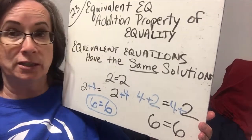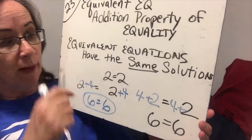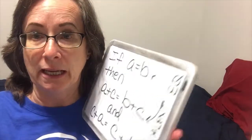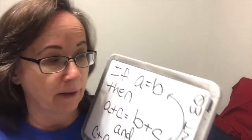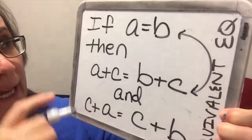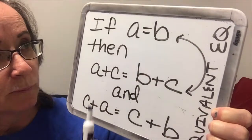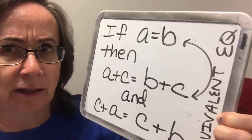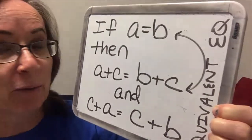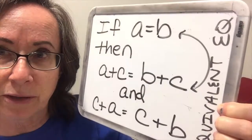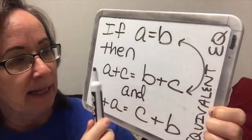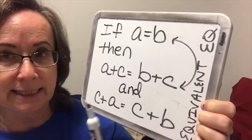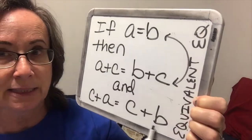That's called the commutative property, and we will be studying that more later. But right now, let's look at our next board and state the addition property of equality. If A equals B — so basically if the left side equals the right side, whether constants or variables — then A plus C equals B plus C, and C plus A equals C plus B.